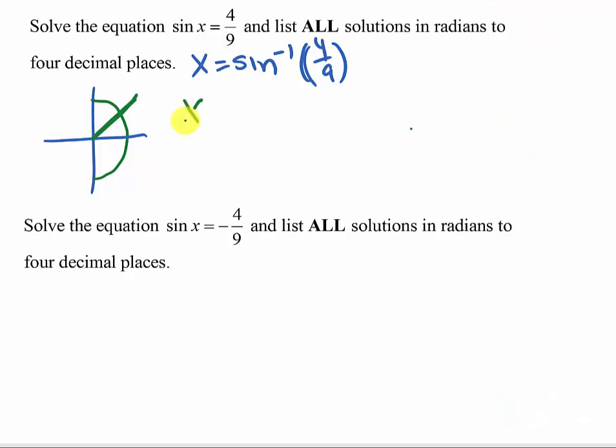Well, I need all solutions, and so I know there is another one on this one loop around the circle because there's a sine value here in quadrant two. If I took that angle right there, it would have the same sine value as the one in quadrant one.